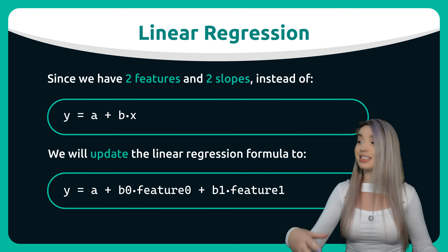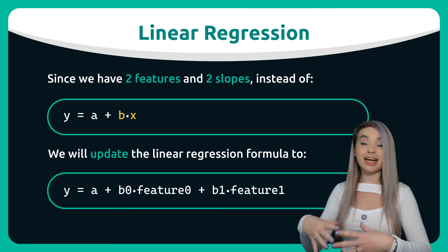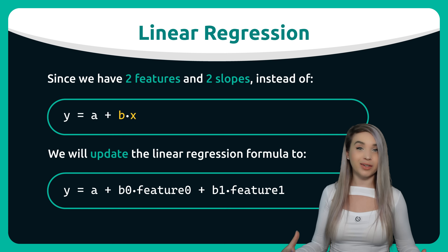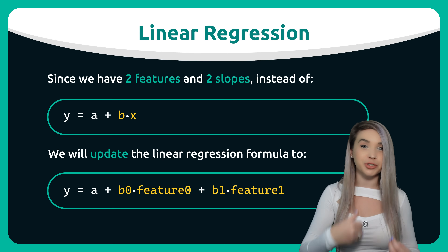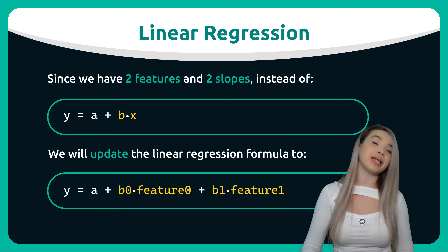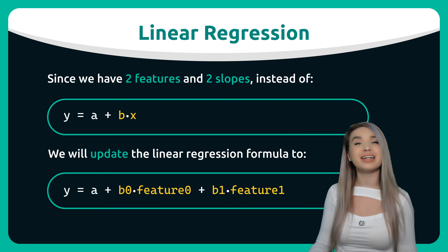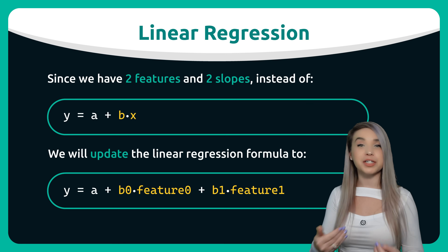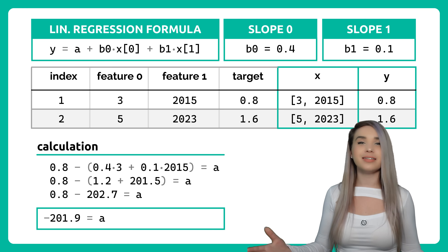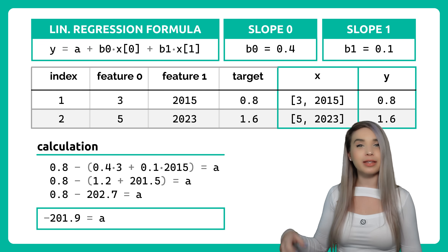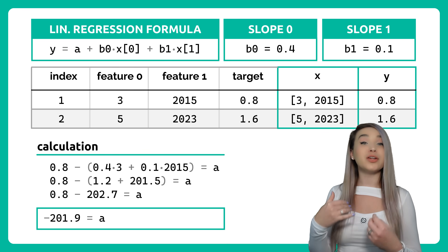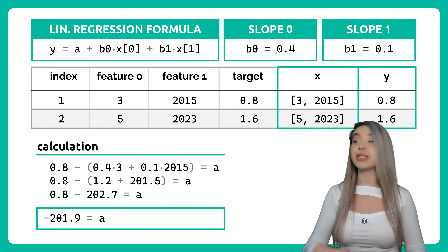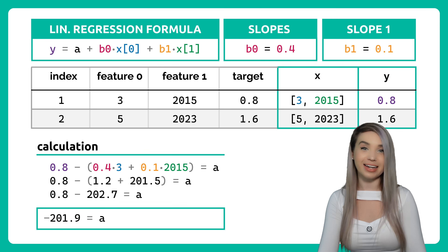So instead of b times x, we are now dealing with b0 times feature 0 plus b1 times feature 1, and eventually we end up with a equals minus 201.9.